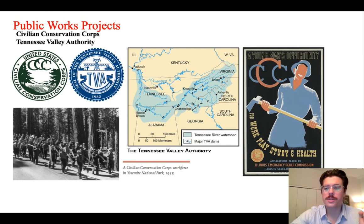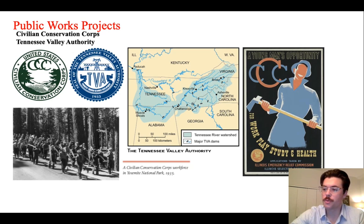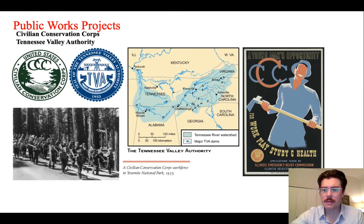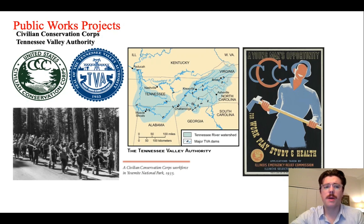The emergency banking bill of 1933 also establishes the FDIC — the Federal Deposit Insurance Corporation — which is essentially a government system that ensures the accounts of individual depositors. There are other banking reforms that FDR enacts in this first wave of New Deal legislation, but at this point I want to transition to another aspect of the New Deal program.